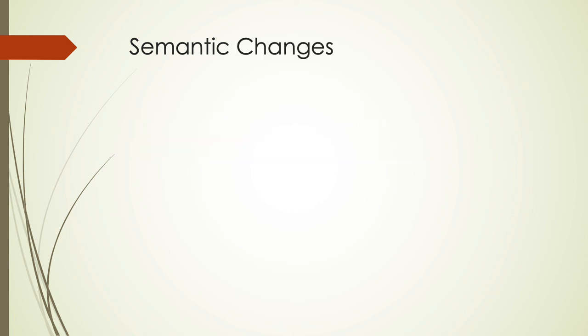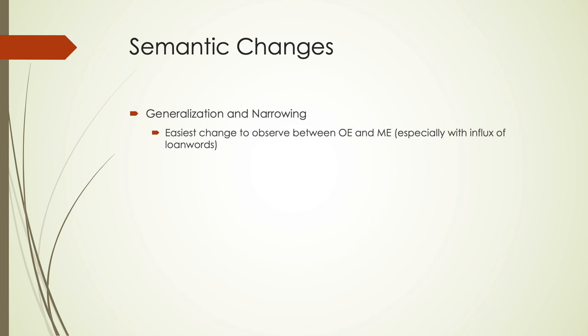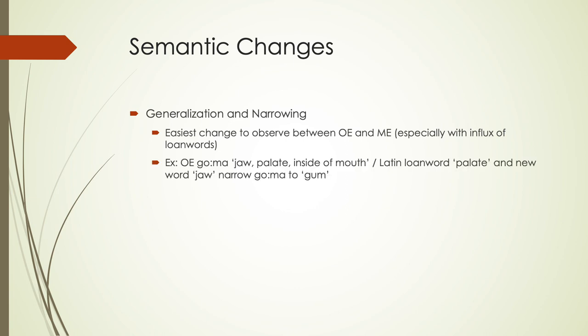Some of the most common types of change is to generalize or narrow the meaning of a word, and this is the easiest to observe between Old English and Middle English. For example, 'goma' meant jaw, palate, or inside of the mouth. With Latin loanwords coming in, a new word 'jaw' narrows things down, and we get 'gum' from 'goma.' In Old English, 'sand' could mean sand or shore — the Low German word 'shore' was borrowed to mean land along a body of water, and 'sand' narrowed to just the granule particles.